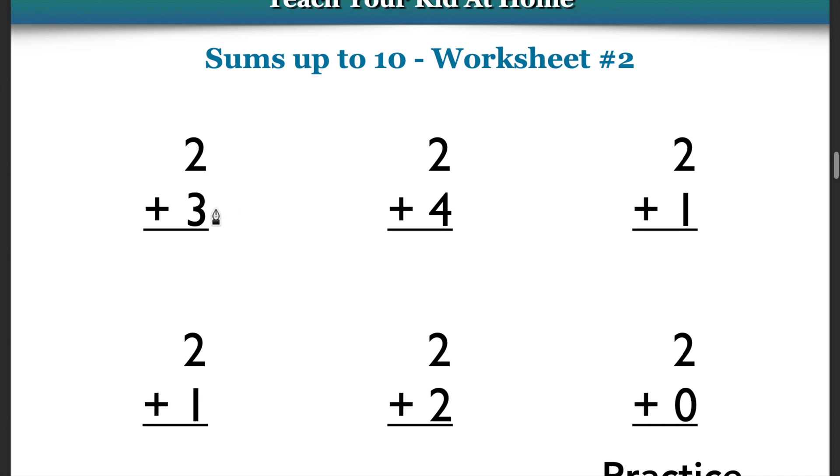So let's apply it to slightly bigger numbers. Let's say you had 2 plus 3. If you started at 2 and you went up 3, where would you be? 5, right? You'd be at 5.